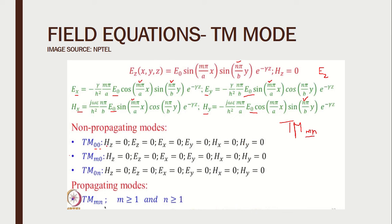If we take N alone to be 0, all the field components again become zero — another non-propagating mode. Similarly, substituting M alone to be 0 with N as any other number also causes all field components to vanish. Therefore, if either M or N is zero, or both are zero, it falls under non-propagating modes. For any propagating mode, we must start from the smallest value: M equal to 1 and N equal to 1.